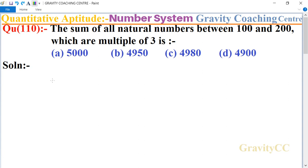So the numbers are 102 plus 105 plus dot dot to 198. This series is in AP, so we use the formula of a_n. Here a_n is given as 198.